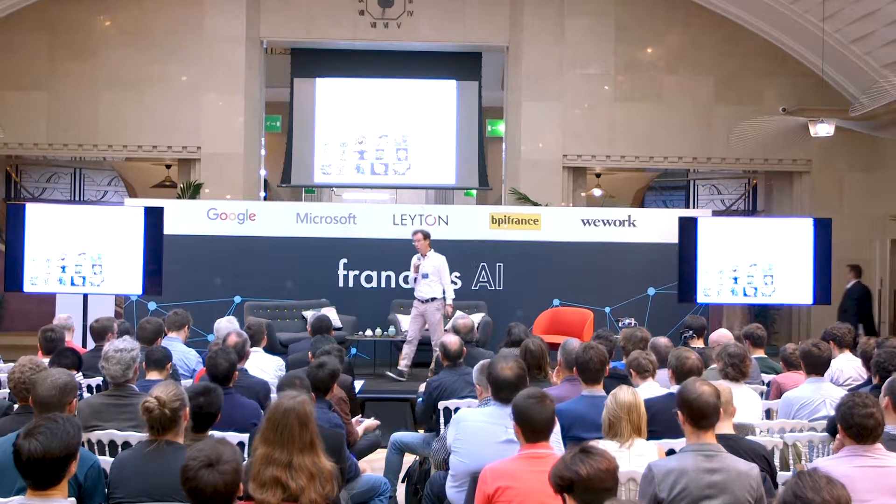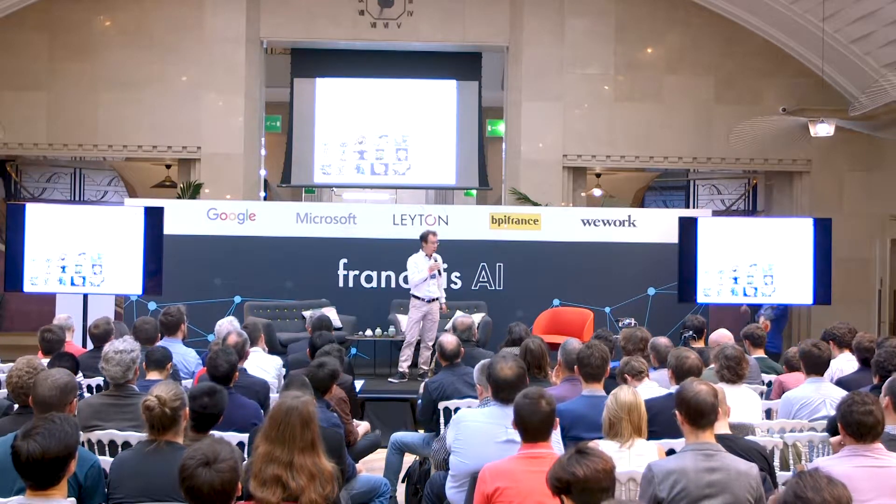The problem I'll be addressing is the general issue of learning. In learning, the big difficulty is that we are dealing with data which have a very high dimension. Think, for example, of the data X being an image. An image has about 1 million pixels, which means that you can view an image as a point in a very high dimensional space — 1 million dimensions.